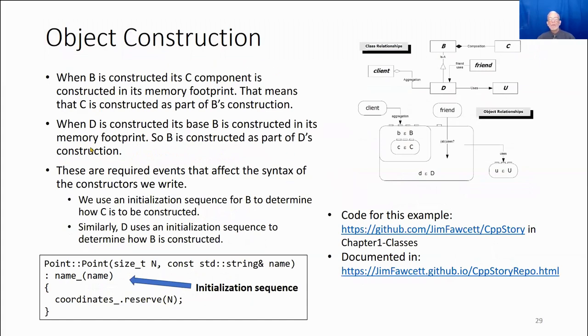This just reiterates what we've said. When B is constructed, C is constructed, and C resides right in that memory footprint, and the same thing for D, these are required events. They have to happen. There's nothing we can do to avoid that sequence of events happening. The language guarantees it is going to happen.